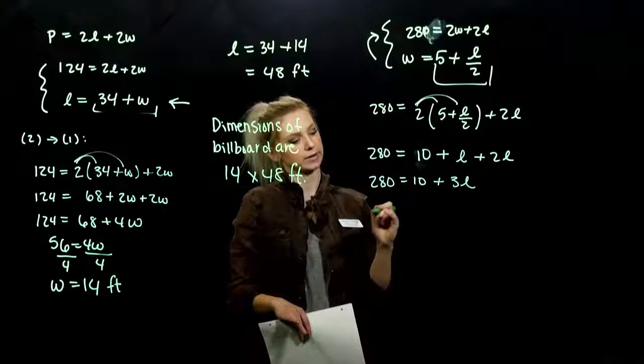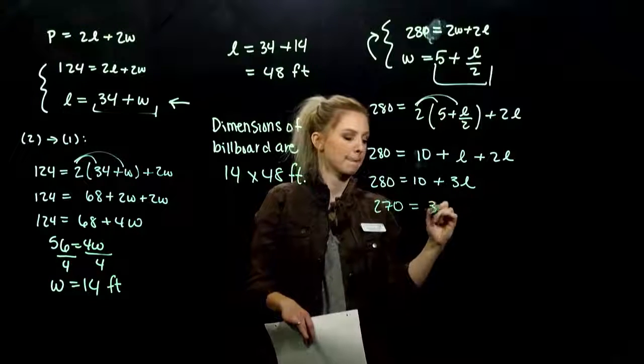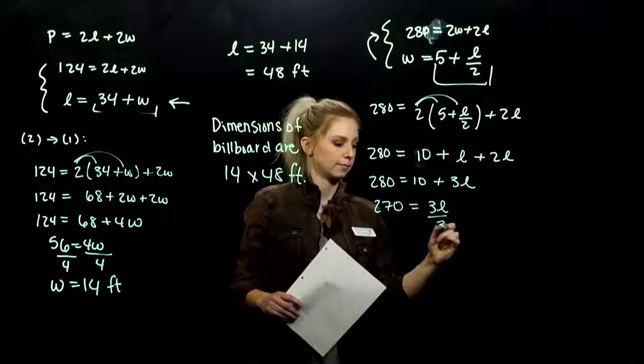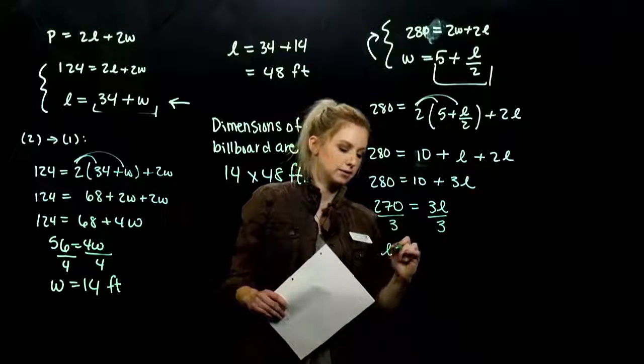Next, subtract 10 from both sides, 270 is equal to 3L. So when we do that division, we're looking at L is equal to 90.